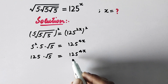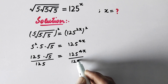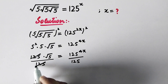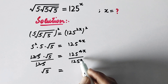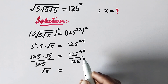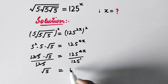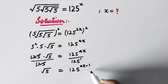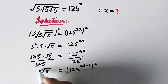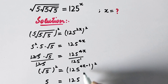Now we will divide both sides by 125. This cancels, leaving the square root of 5 equal to 125 to the power 4x minus 1, since the bases are the same so we subtract the powers. By taking squares on both sides again, we get 5 is equal to 125 to the power 8x minus 2.